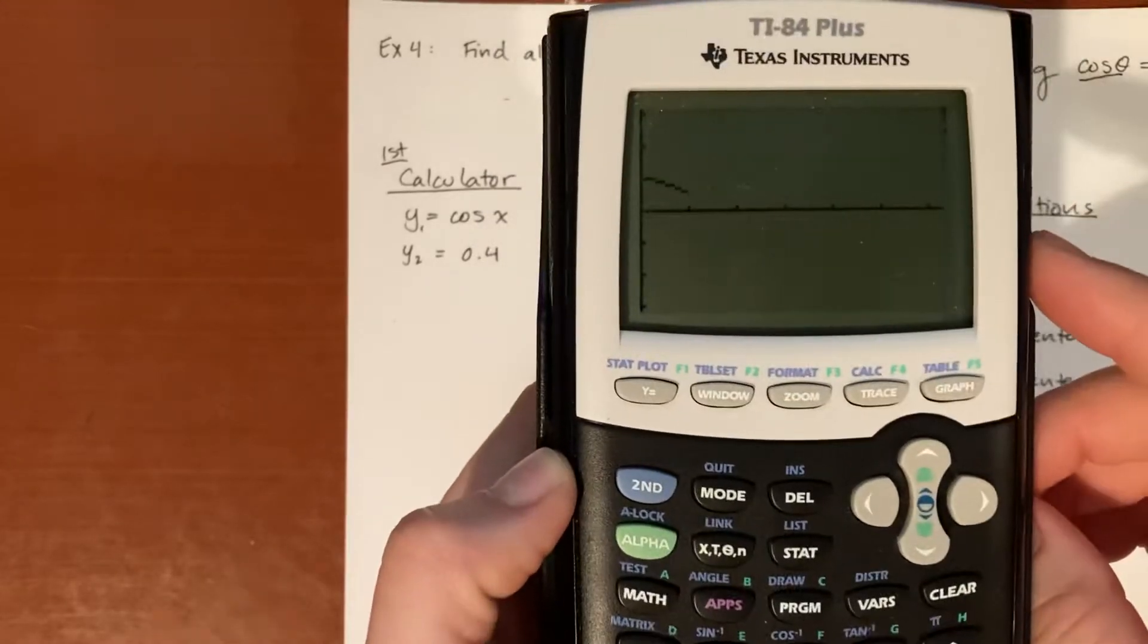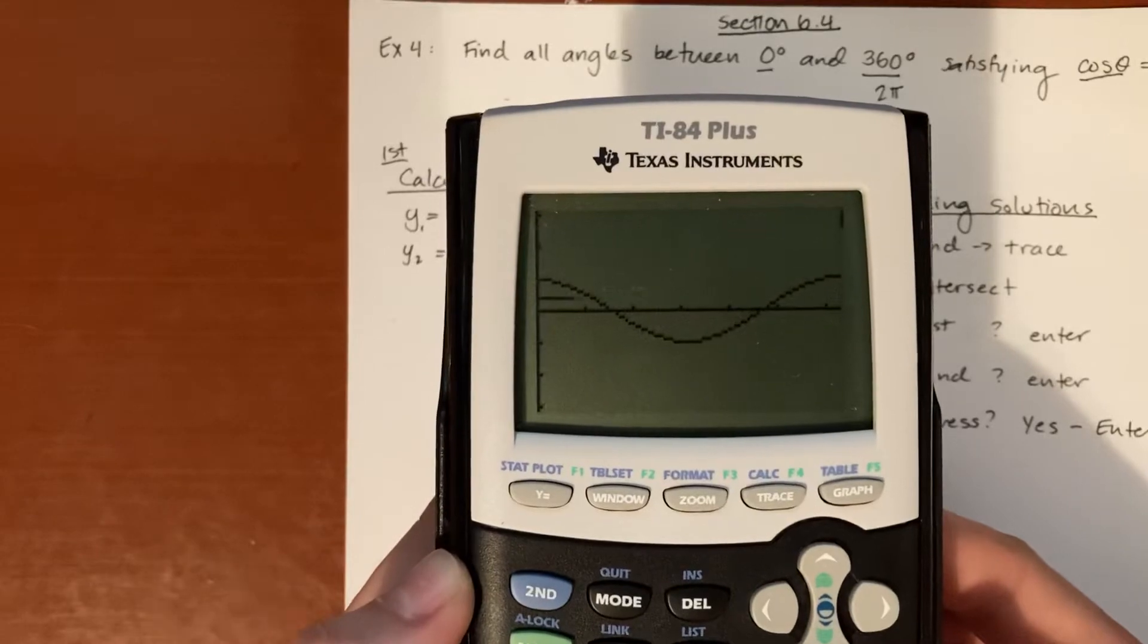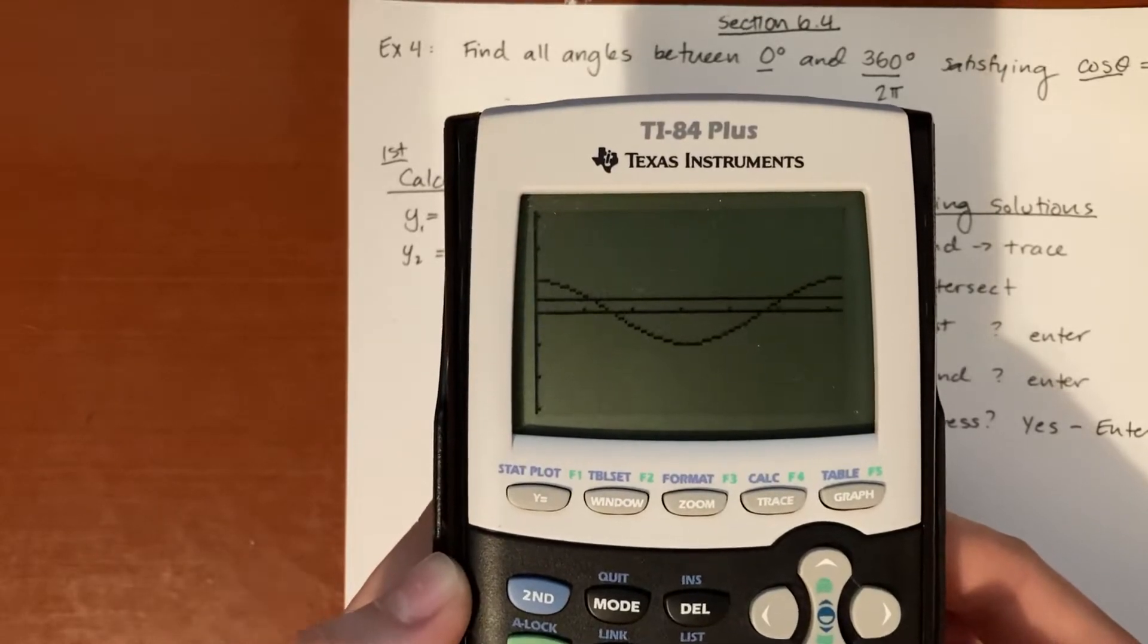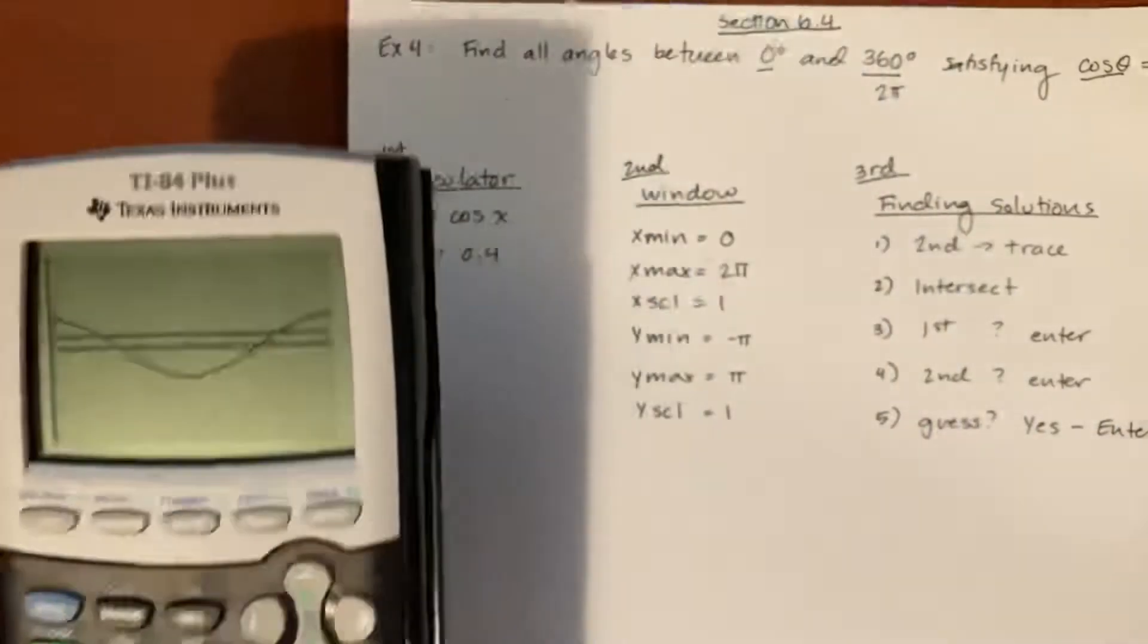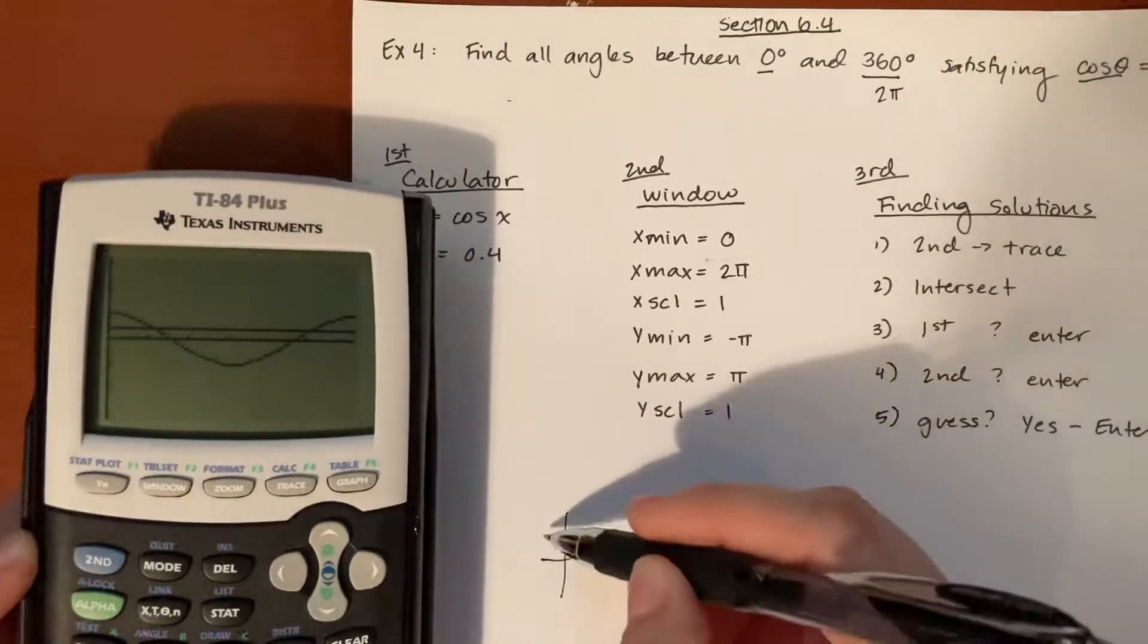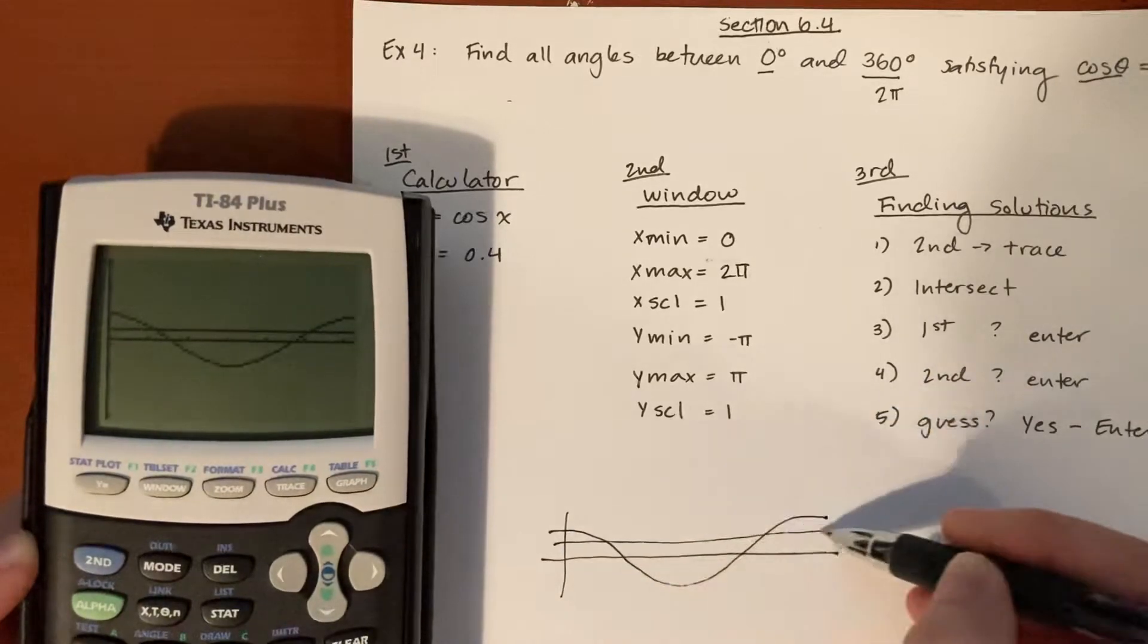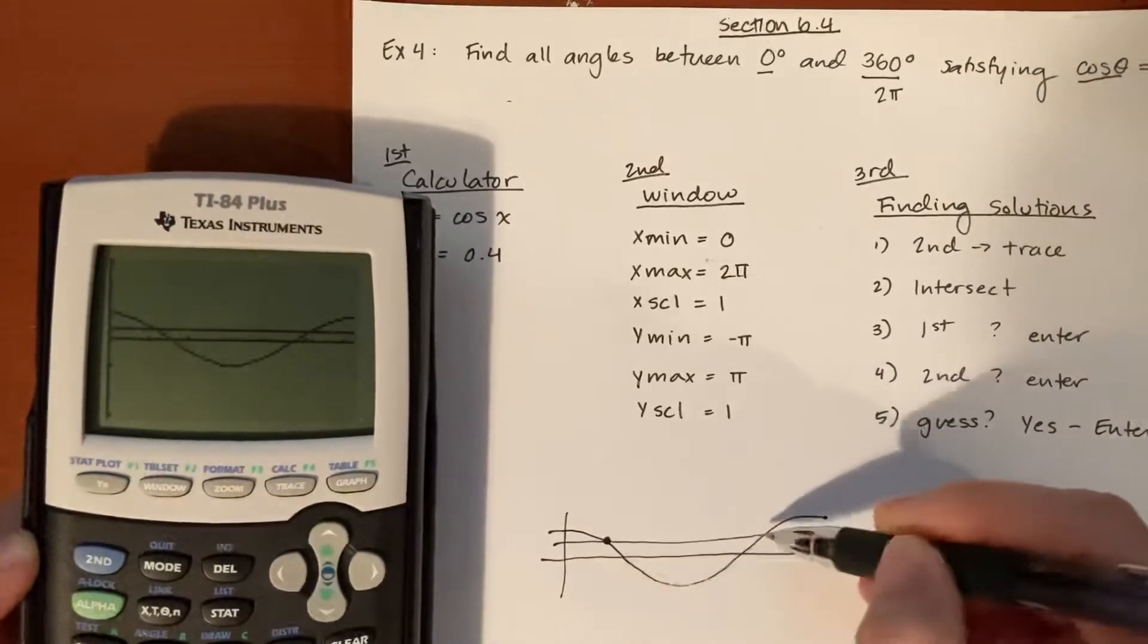So we're going to go ahead and hit graph. And there you go, you can see cosine of x is graphing on our screen, and then in comes the 0.4. Awesome. So right now I'm just going to go ahead and sketch what we have.